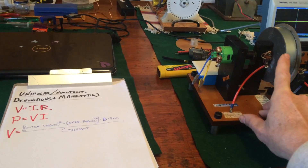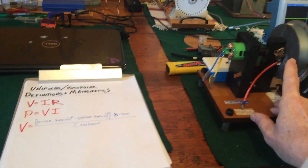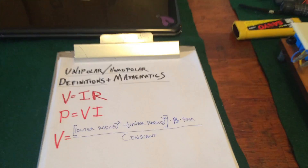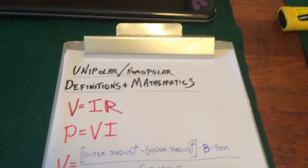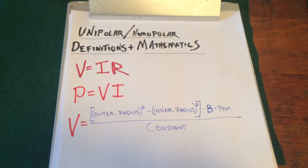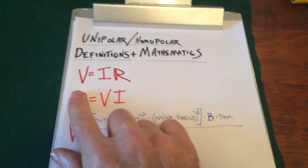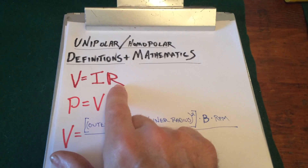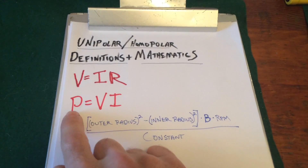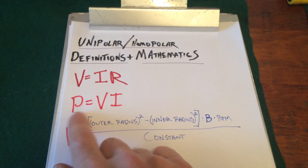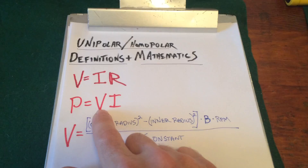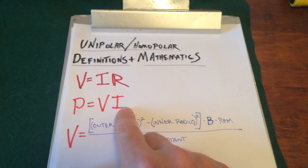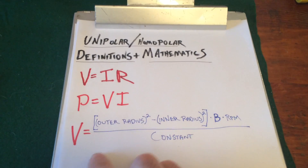So, what is the voltage in these systems? Let's take a quick look. Primarily, of course, we're working with V equals IR, and we're working with power equal to the voltage times the current.